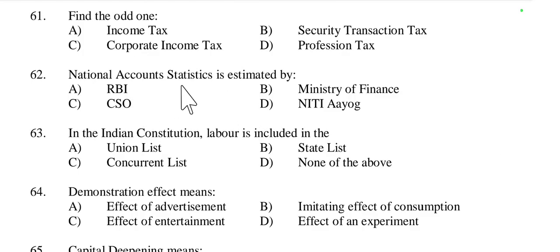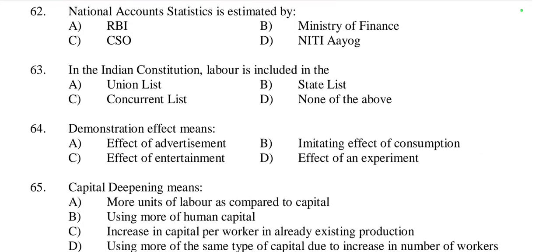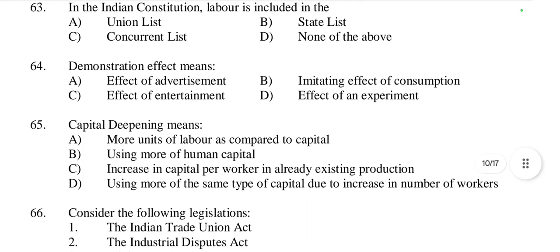Question 62: National Accounts Statistics is estimated by — RBI, Ministry of Finance, CSO (Central Statistical Organization), or NITI Aayog? It is estimated by CSO — the Central Statistical Organization. Option C is right. Question 63: In the Indian Constitution, labor is included in — the union list, state list, concurrent list, or none? Labor is included in the concurrent list, meaning both the union and state governments have authority to legislate on matters related to labor. However, in case of conflict, union laws prevail.